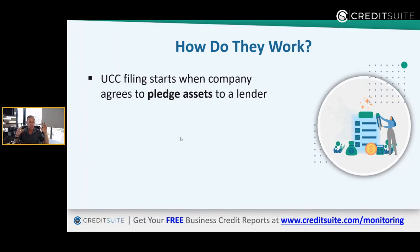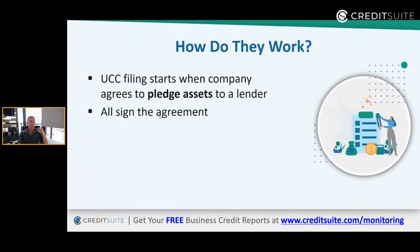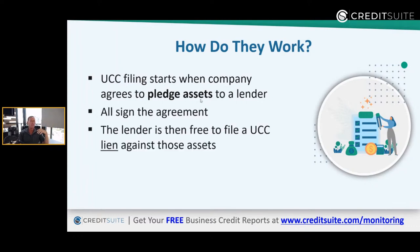A UCC filing starts when we get secured debt and say, here's an asset we're pledging as collateral in exchange for you giving us the money. The lender and borrower sign the contract, and then the lender is free to file a UCC lien against those assets.